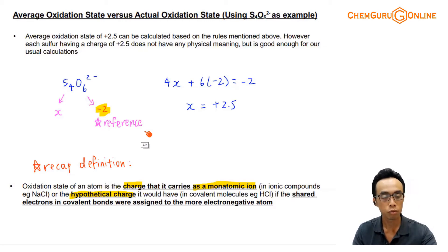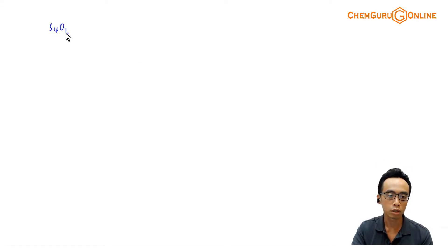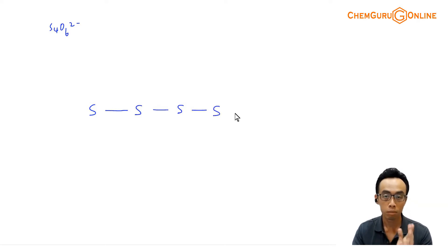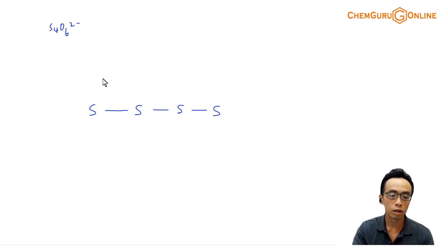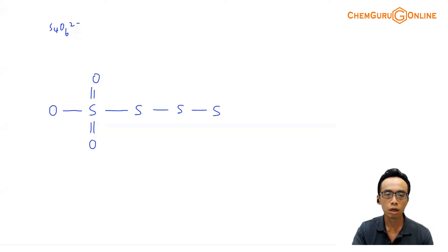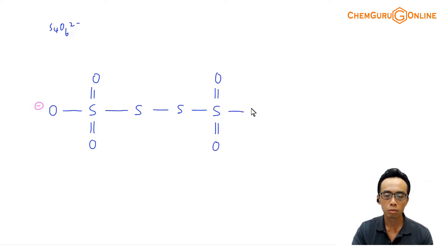Let me draw the structure of S₄O₆²⁻ and talk about it. The structure has 4 sulfur atoms all joined together in a chain: sulfur bonded to sulfur, bonded to sulfur, bonded to sulfur. Then there are 6 oxygen atoms. One end sulfur has a double bond O, another double bond O, and a single bond O with a minus charge. The other end sulfur is the mirror image: double bond O, double bond O, single bond O minus. This is S₄O₆²⁻, and it is symmetrical.